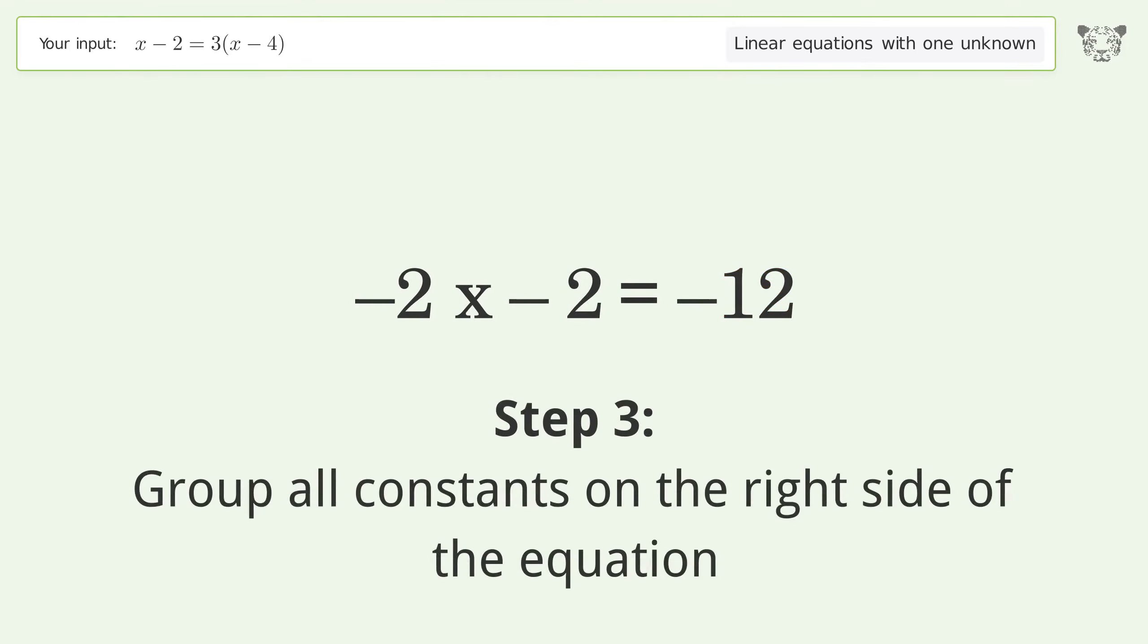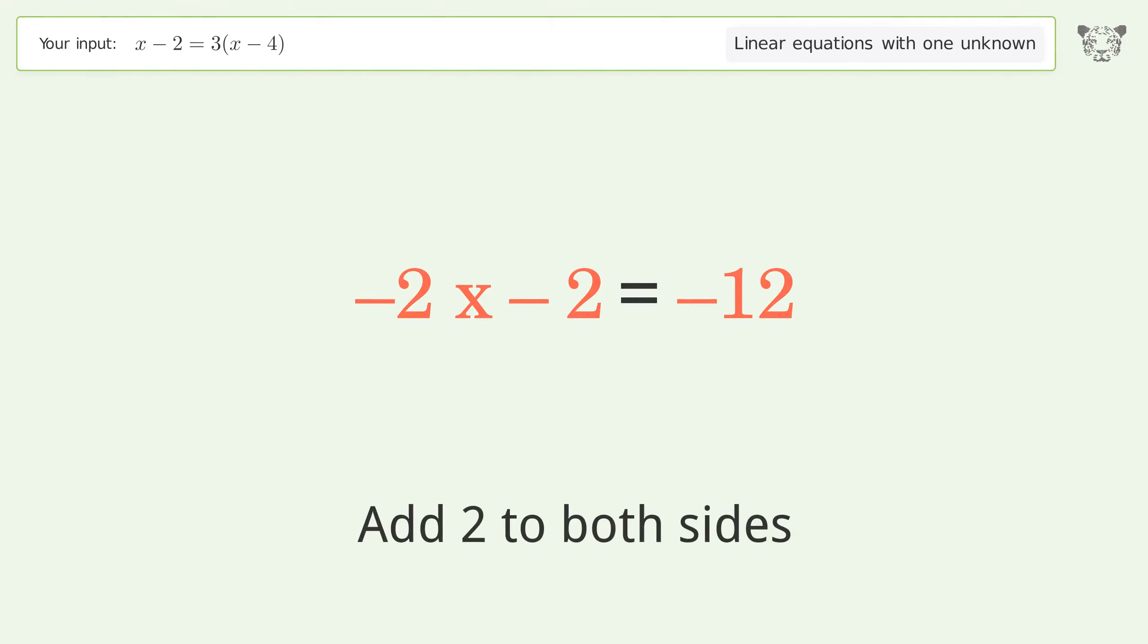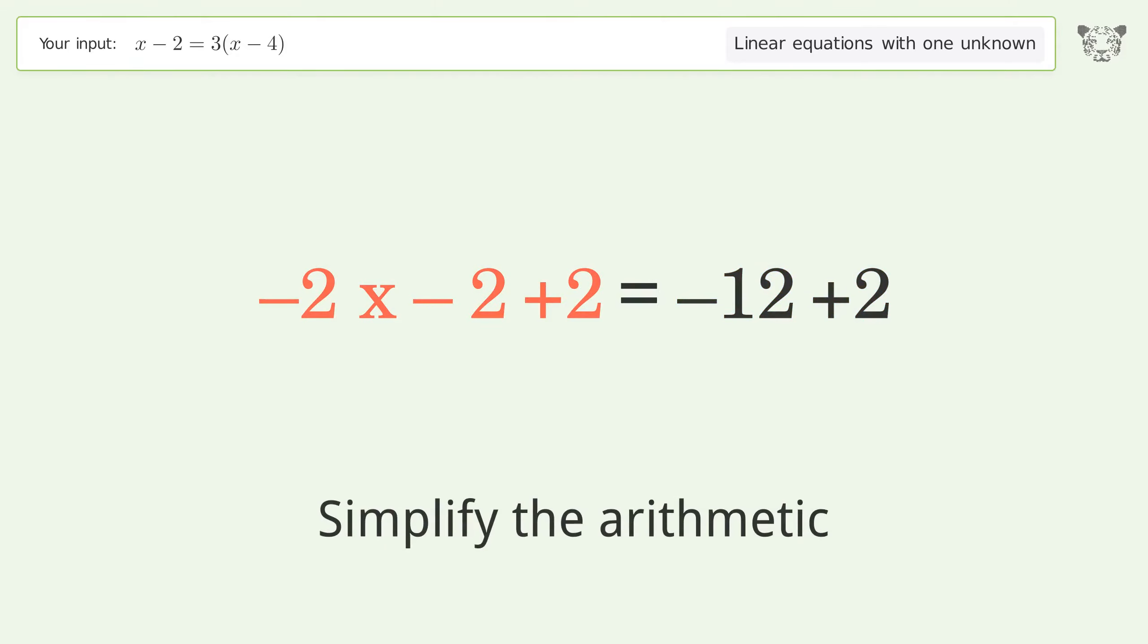Group all constants on the right side of the equation. Add 2 to both sides and simplify the arithmetic.